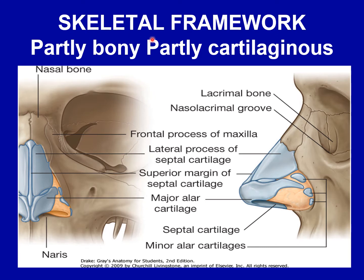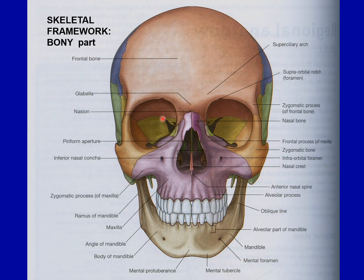The skeletal framework of the external nose is partly bony and partly cartilaginous. The upper one-third of the external nose is bony. This bony framework is formed by the two nasal bones, which form the bridge of the nose. These two nasal bones meet in the midline and are held together on either side by the frontal process of the maxilla.